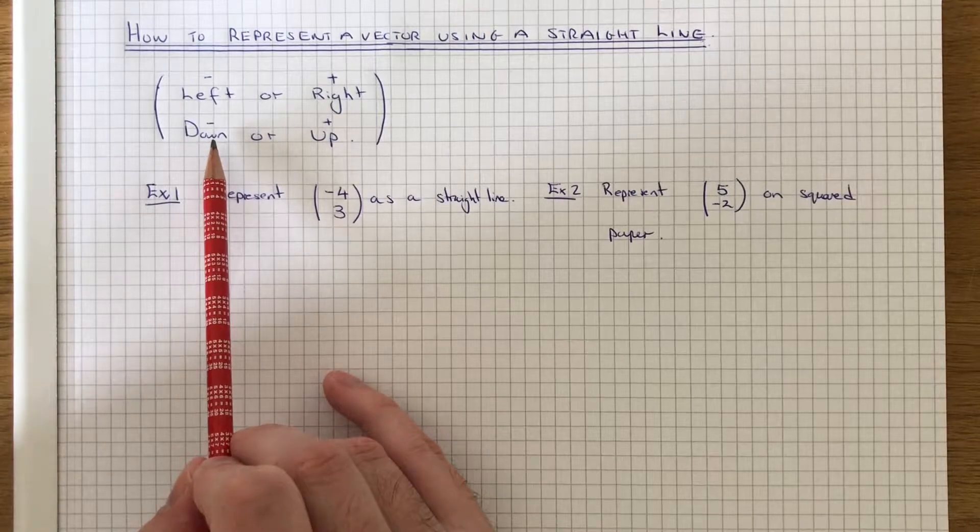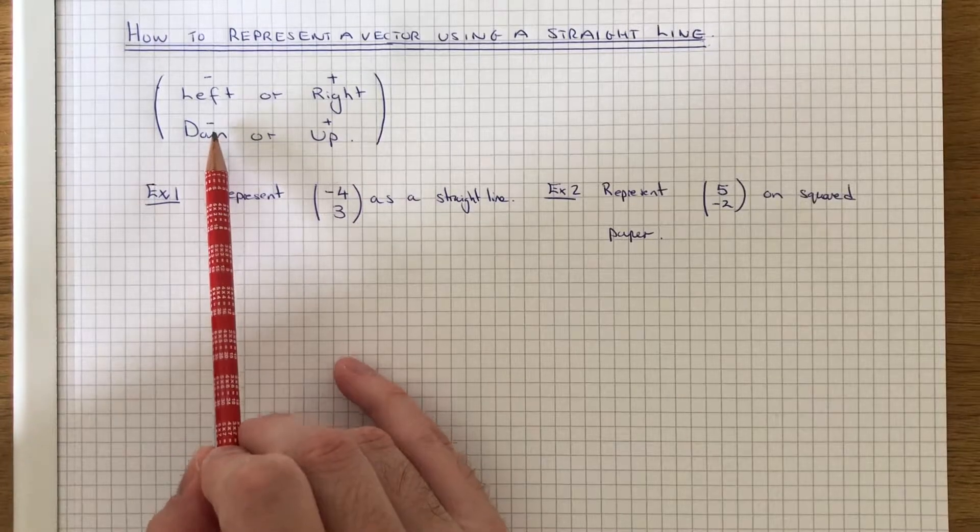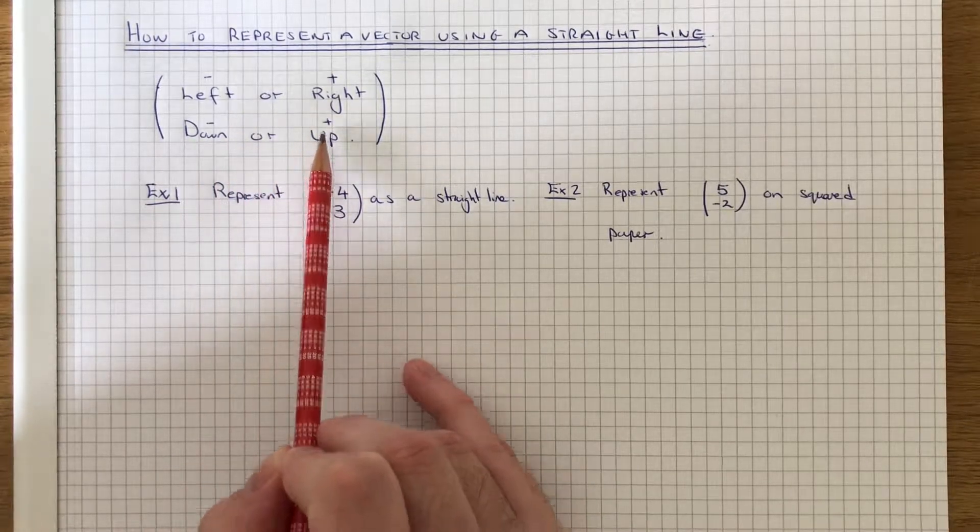The bottom number of the vector will tell you if you move the point down or up. If it's negative, you move the point down. If it's positive, you move the point up.